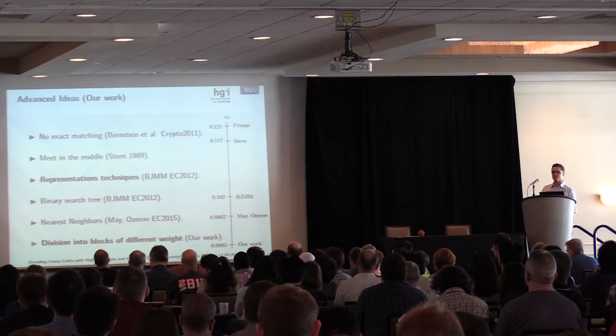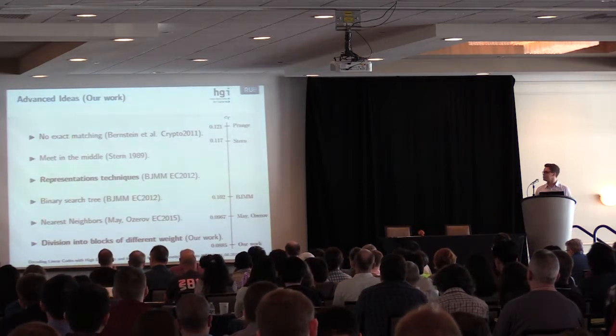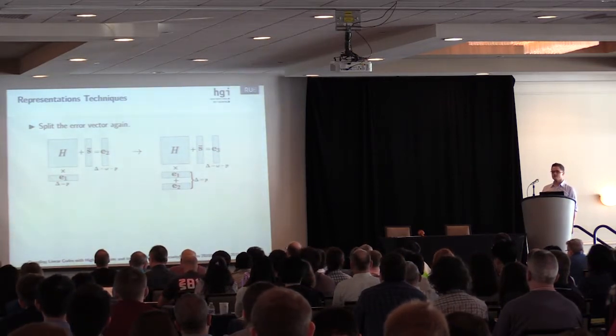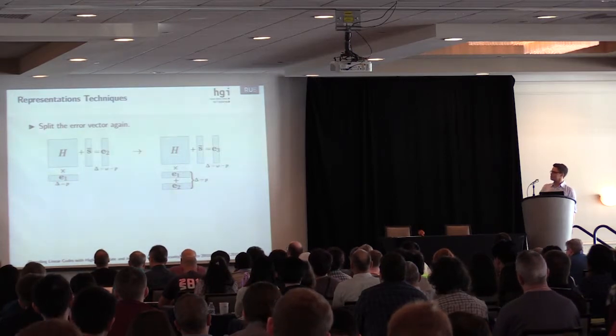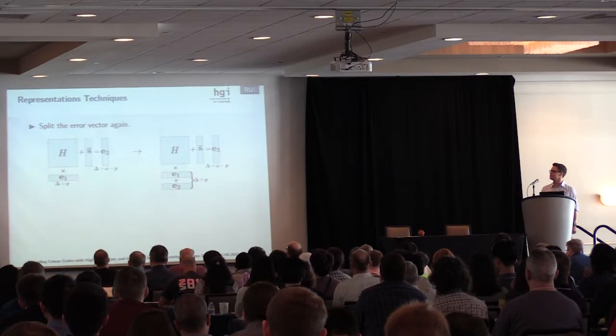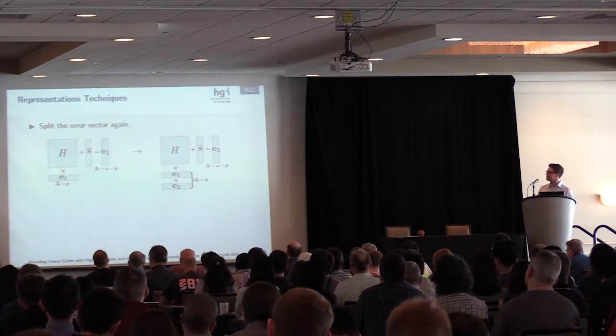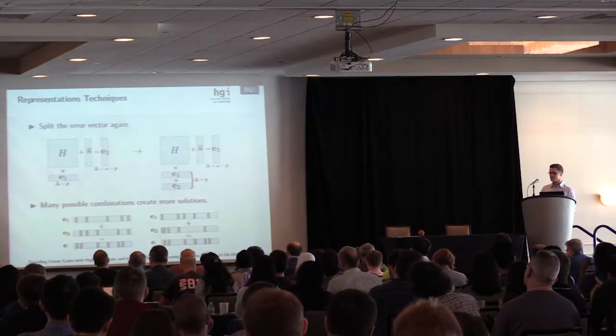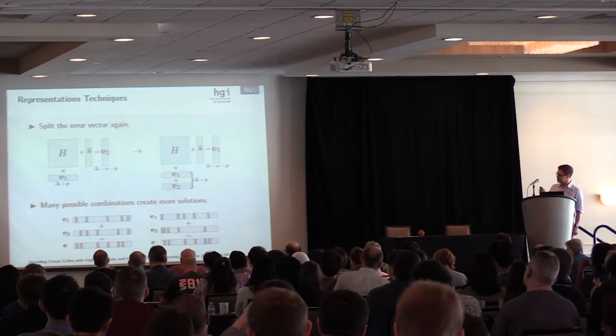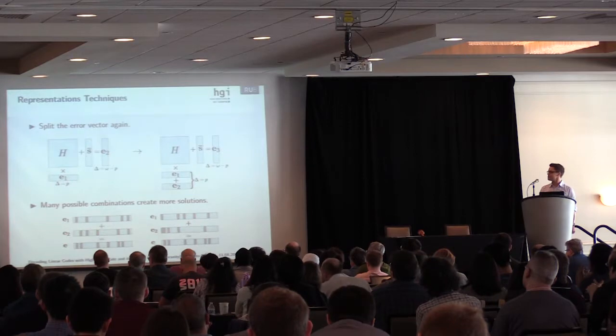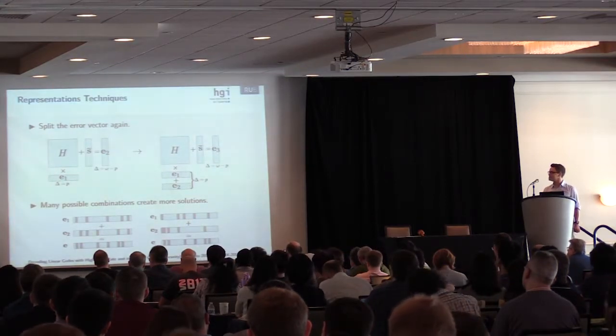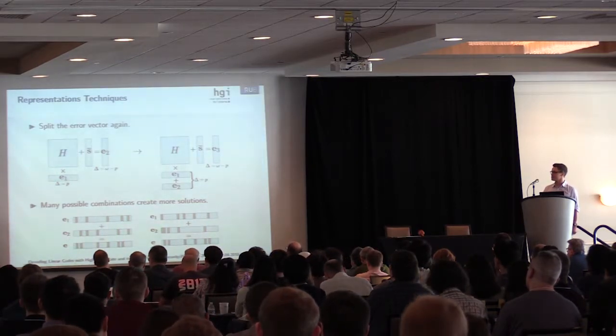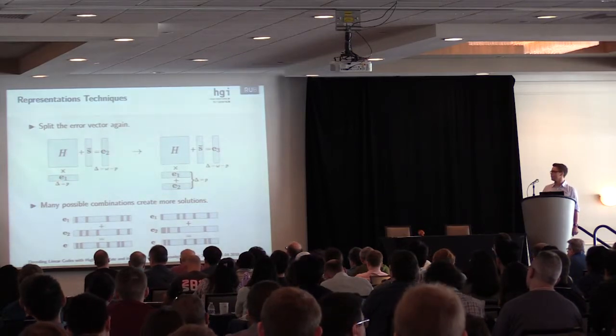Now I will expand in detail the representation techniques. The main idea is to split the vector again and write one part of the vector, what was formerly e1, as sum of two vectors, now e1 plus e2, which have weights that add up to sum p. This yields many possible combinations and more solutions. For instance, if you look at the vector e at the bottom, the dark parts mark the ones. There are many possible combinations of vectors e1 and e2 which add up to the same vector e.